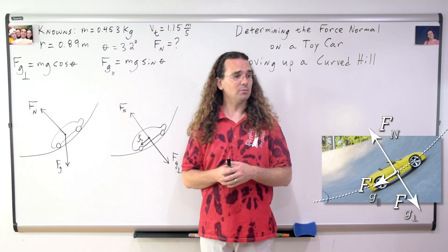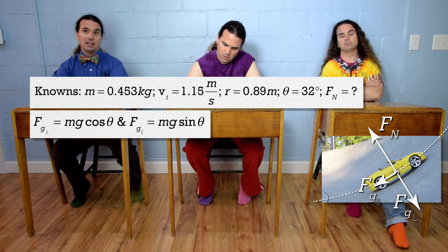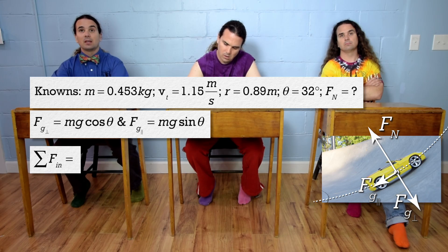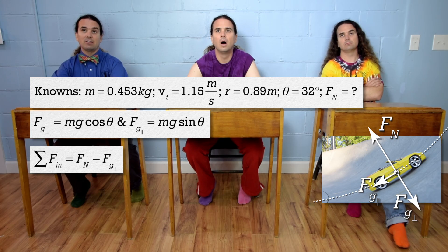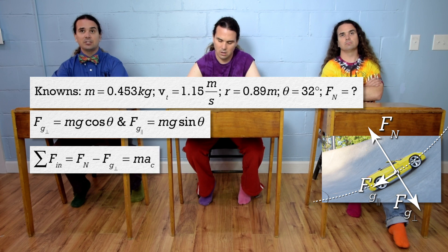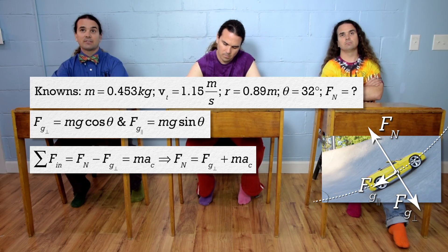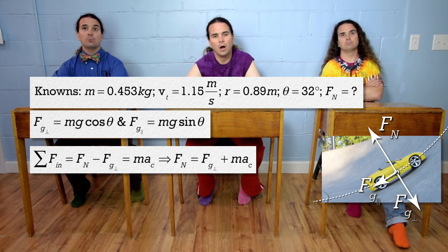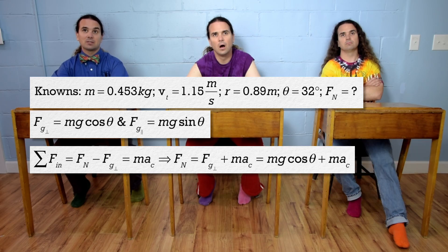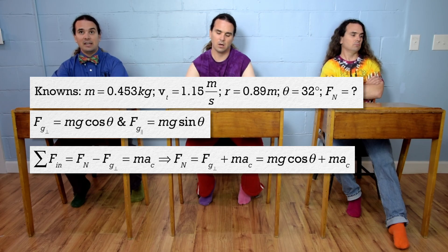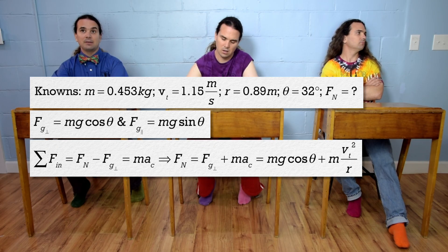Billy, please finish the problem. Now, we sum the forces in the in direction. The net force in the in direction equals mass times centripetal acceleration. Add force of gravity perpendicular to both sides to solve for force normal, and now we can substitute in equations. Force of gravity perpendicular equals mass times acceleration due to gravity times cosine theta, and centripetal acceleration equals tangential velocity squared divided by radius.